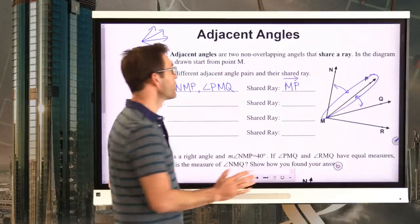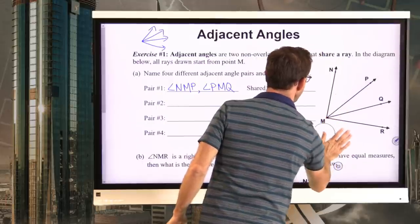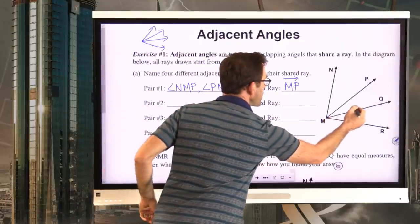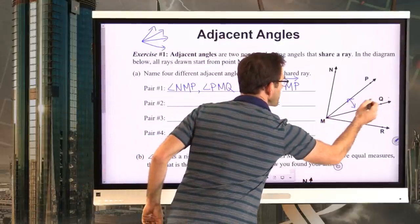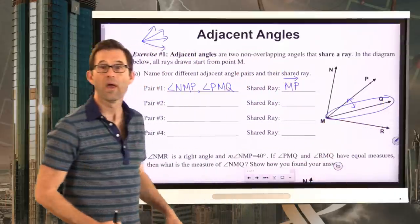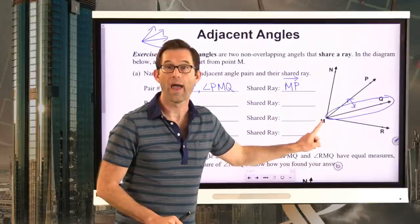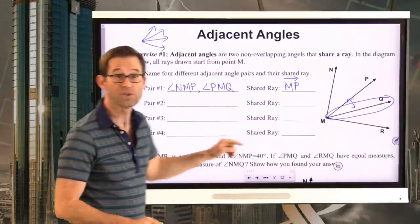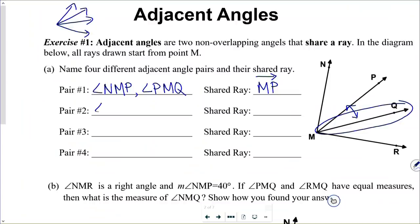Let's stick with angle PMQ. One of the rays PMQ has is MQ. We could talk about angle QMR, which also has ray MQ and sits beside PMQ. So another angle pair is angle PMQ and angle QMR, and they share ray MQ.